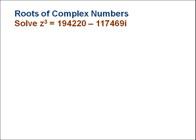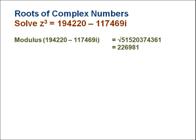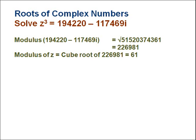Now we look at how De Moivre can be used to find the roots of complex numbers. The question asks us to find the cube roots of 194,220 − 117,469i. The first step is to find the modulus: we square both 194,220 and 117,469, add them, and take the square root — like Pythagoras — giving √515,203,743,361 = 226,981. Because we are cube rooting, we then find the cube root of that modulus, which is 61. This will be the modulus of all three cube roots.